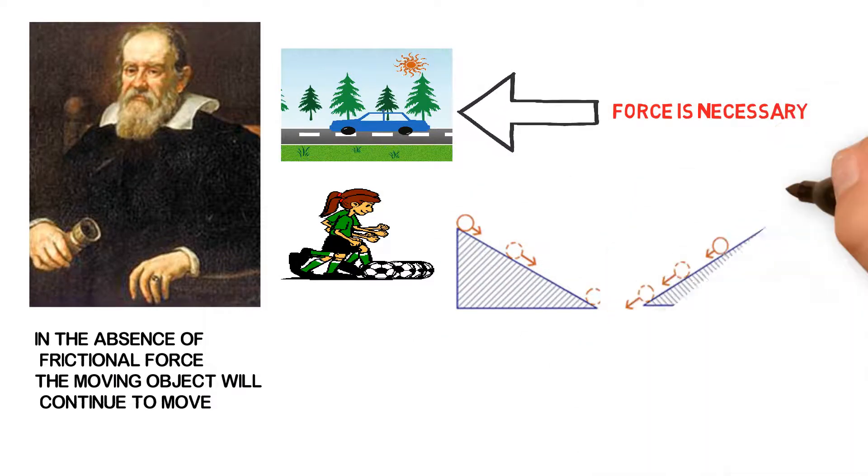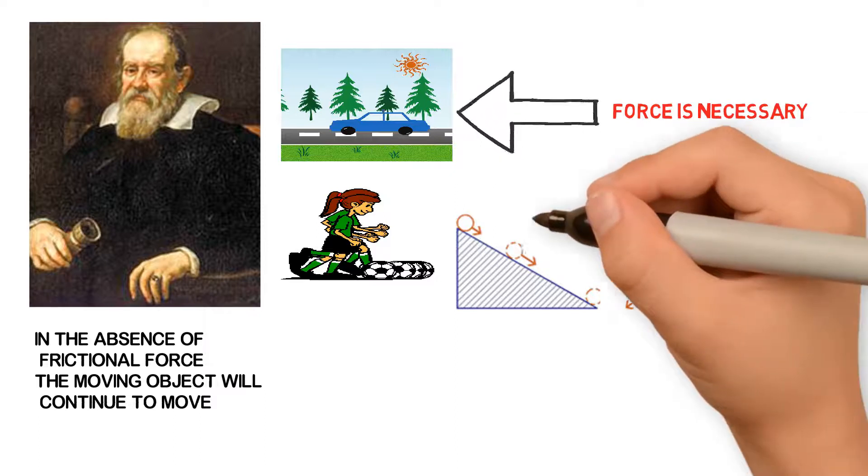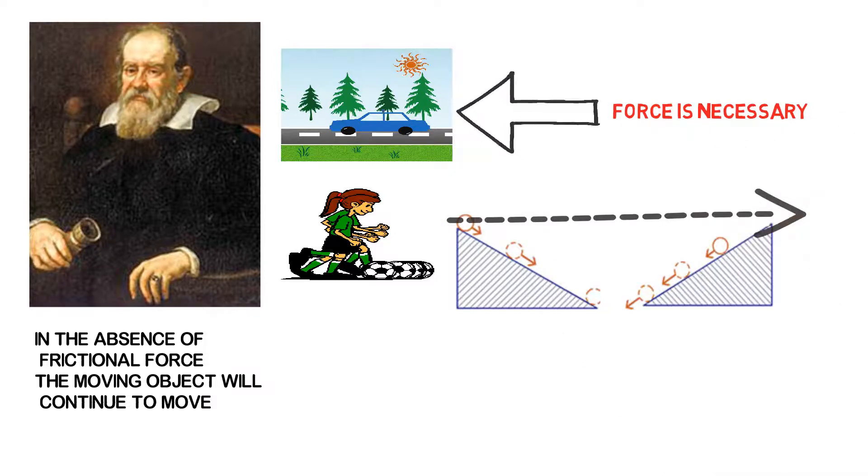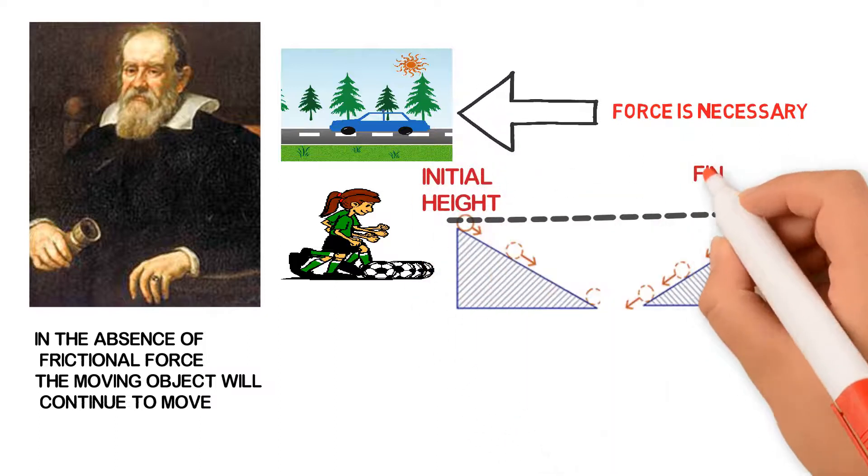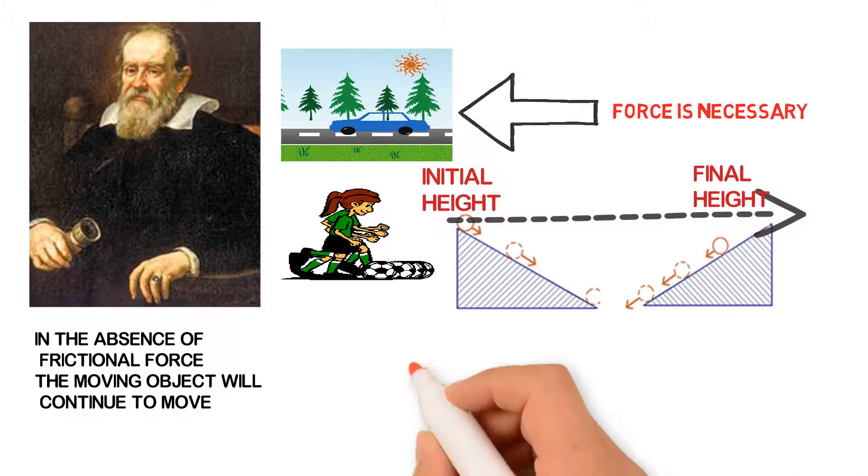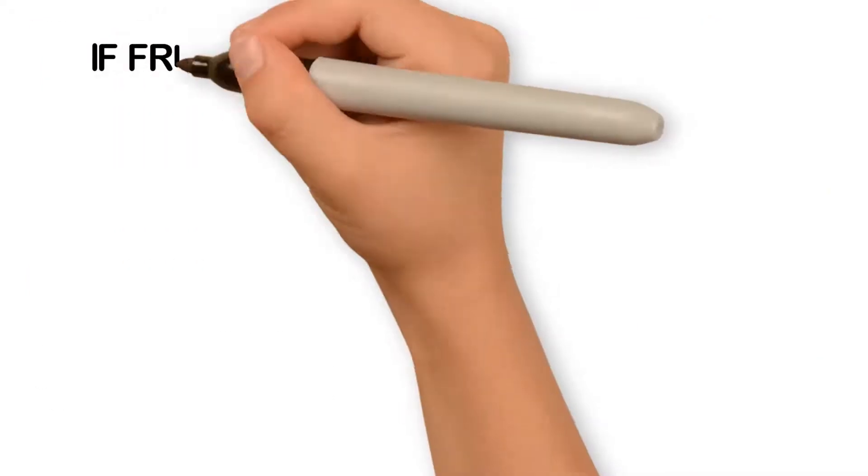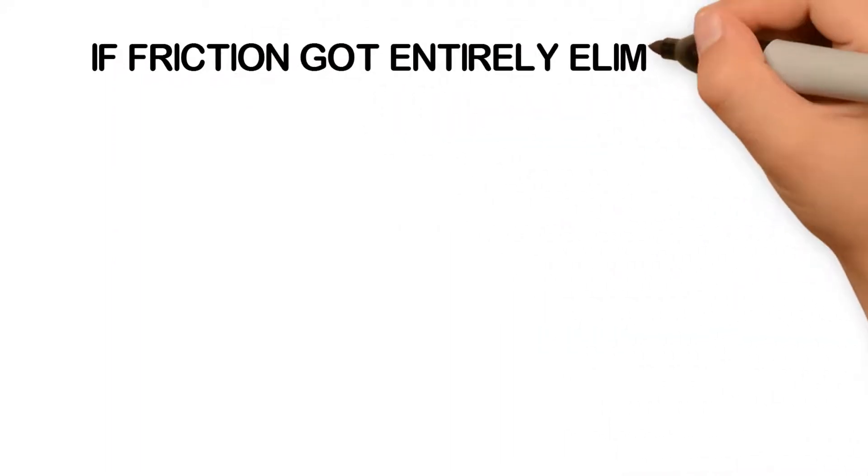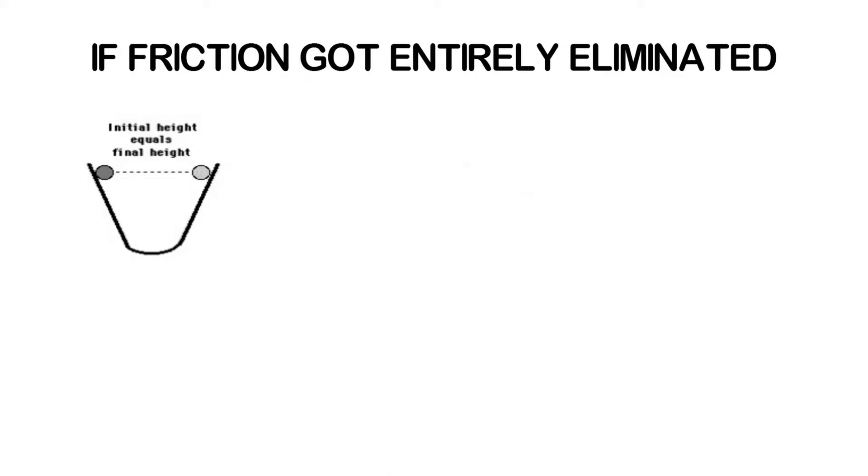For that, he gave an experiment by taking two slopes and rolling a ball from one slope. He found that there was a difference between the initial height and final height attained by the ball. This was due to the presence of frictional force, and if the frictional force got entirely eliminated, then the height attained by both the balls will be the same.